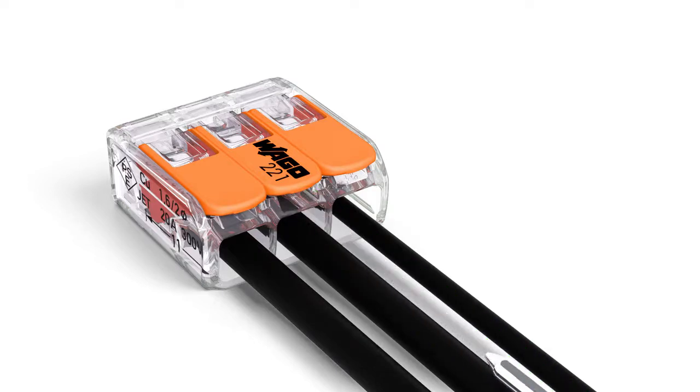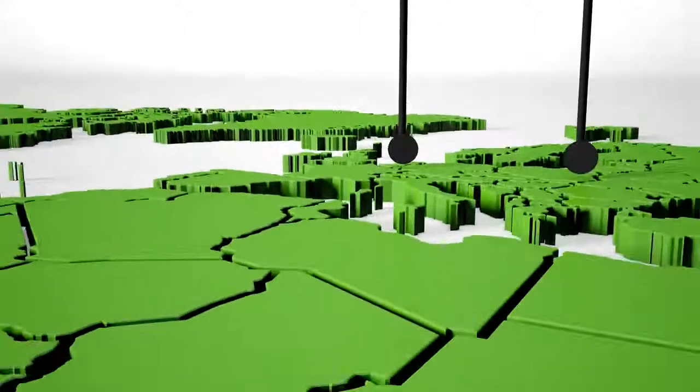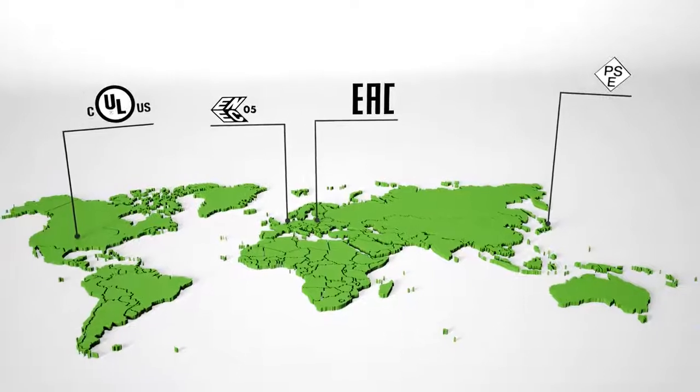Two easily accessible test slots, one in the conductor entry direction and one opposite this, provide easy test conditions even when installed. The 221 series supports many diverse applications beyond building installations.